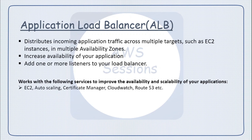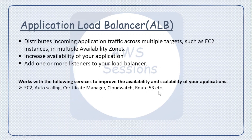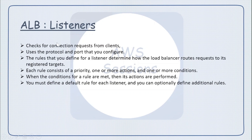You can have one or more listeners on your ALB as per your requirement. ALB also works with different AWS services to increase availability and scalability, such as EC2 Auto Scaling, Certificate Manager, CloudWatch, and Route 53. For example, you can use CloudWatch for monitoring, create certificates via Certificate Manager and add them to the ALB, or create a hosted zone in Route 53 with an A record pointing to the ALB.